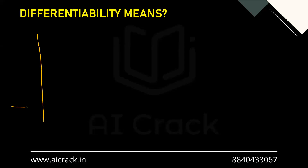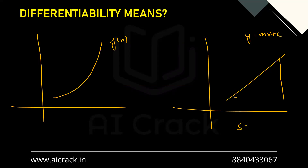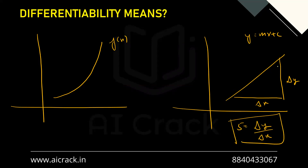Let's take two examples: one is a curve f(x), and one is a straight line y = mx + c. The property of a straight line is that slope is constant for every single point. So we can calculate slope using delta y by delta x — the average method. But we cannot use that for a curve f(x), because at every single point the slope is changing. So how do we calculate slope at a particular point on a curve?